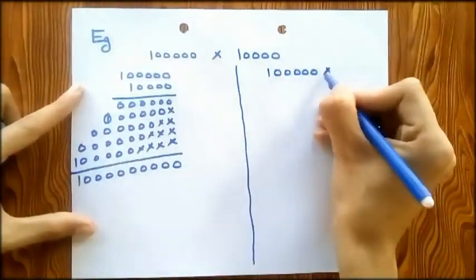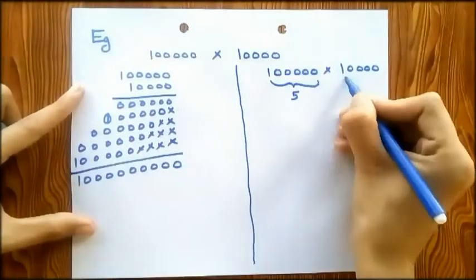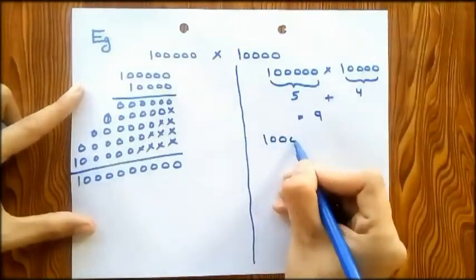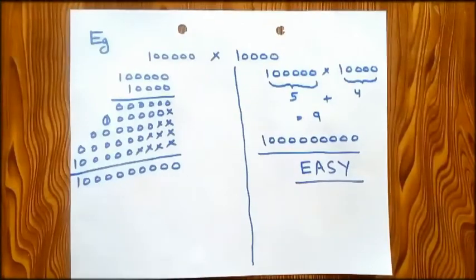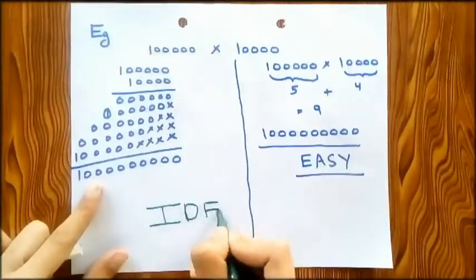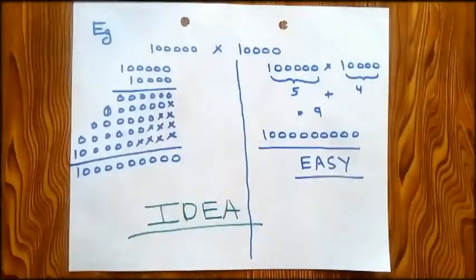You will just count up the numbers of zeros, then add those numbers and then you will write the answer: 1 followed by that number of zeros. And from here the idea of logarithm came in.